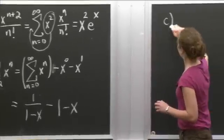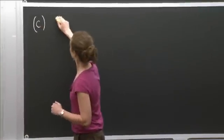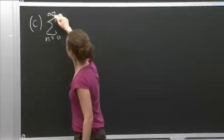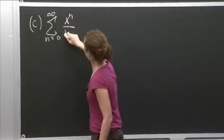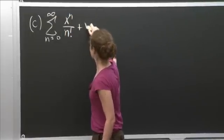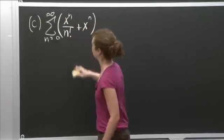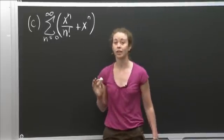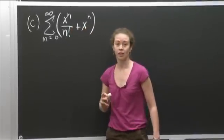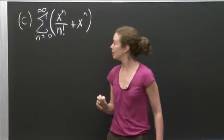All right, let me write C again. So sum n equals 0 to infinity, x to the n over n factorial, plus x to the n. OK, so it was the sum n equals 0 to infinity, x to the n over n factorial, plus x to the n. And the point to recognize here is, again, as Professor Jarrison mentioned, you're really treating these almost like polynomials.